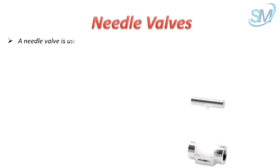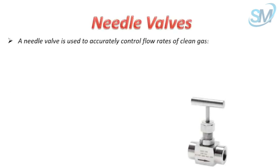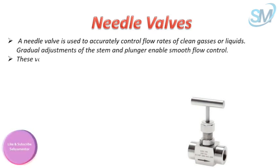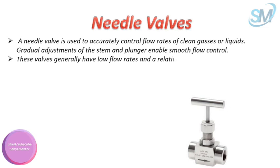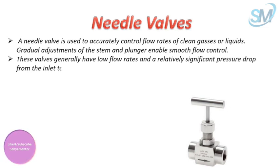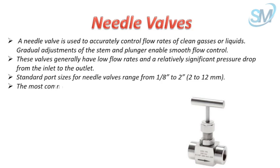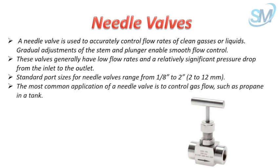A needle valve is used to accurately control flow rates of clean gases or liquids. Gradual adjustments of the stem and plunger enable smooth flow control. These valves generally have low flow rates and a relatively significant pressure drop from the inlet to the outlet. Standard port sizes range from 1/8 inch to 2 inch, or 2 to 12 millimeters. The most common application of a needle valve is to control gas flow, such as propane in a tank.